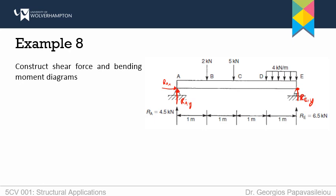In this case I only have to calculate the resultant of DE. It is a rectangular uniformly distributed load, so the resultant will be a force directly at the mid-span over which the UDL applies. It is 1 meter, so the distance from both ends for the resultant will be 0.5 meters. The magnitude of the resultant is the area of the shape of the UDL — it is a rectangular one, so it is 4 times 1, that is 4 kN.